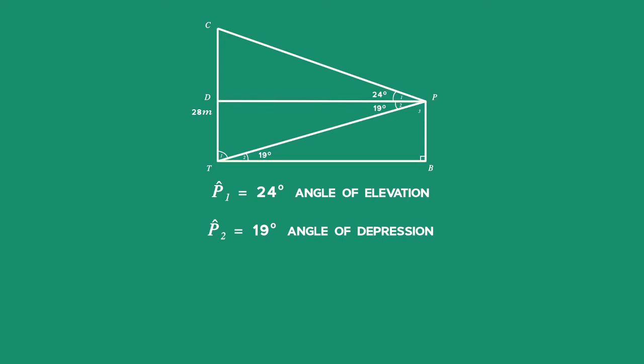Therefore, angle CDP is also 90 degrees by corresponding angles. In triangle CDP, we can calculate using the sum of angles in a triangle that angle C is equal to 180 degrees minus the sum of 24 degrees and 90 degrees to get 66 degrees.